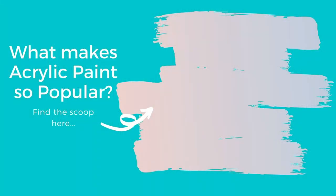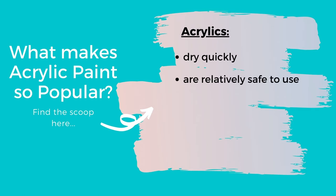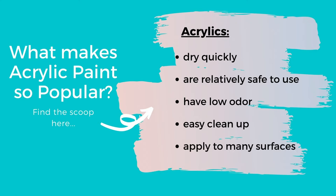Acrylics are one of the most popular paints on the market, but weren't commercially available until the 1950s. What makes acrylics so popular? They can dry quickly, within minutes to hours rather than days. They're relatively safe and many are non-toxic. They have a low odor so we can use them indoors, and they clean up with just soap and water. Finally, they're versatile enough to apply to so many different surfaces, coming in a whole range of colors and forms, from thick and pasty to very thin.